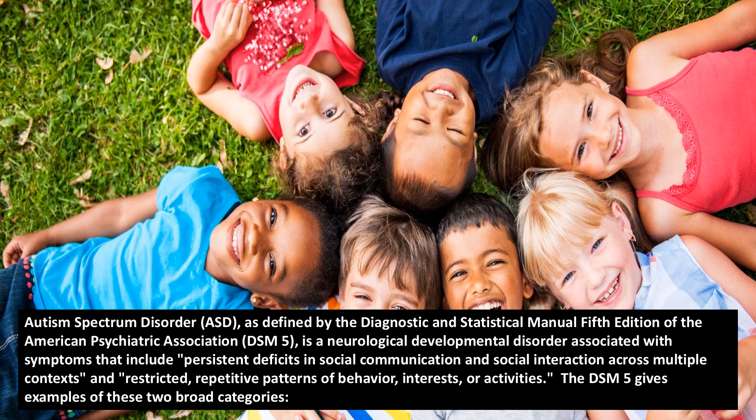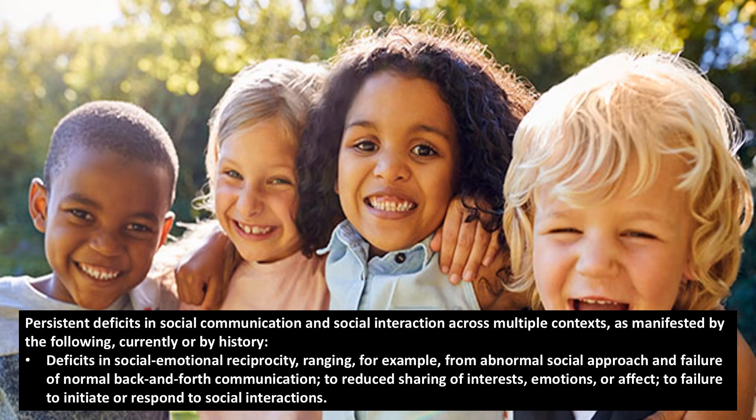The DSM-5 gives examples of these two broad categories. Persistent deficits in social communication and social interaction across multiple contexts, as manifested by the following, currently or by history: deficits in social-emotional reciprocity, ranging, for example, from abnormal social approach and failure of normal back-and-forth communication to reduced sharing of interests, emotions, or affect, to failure to initiate or respond to social interactions.